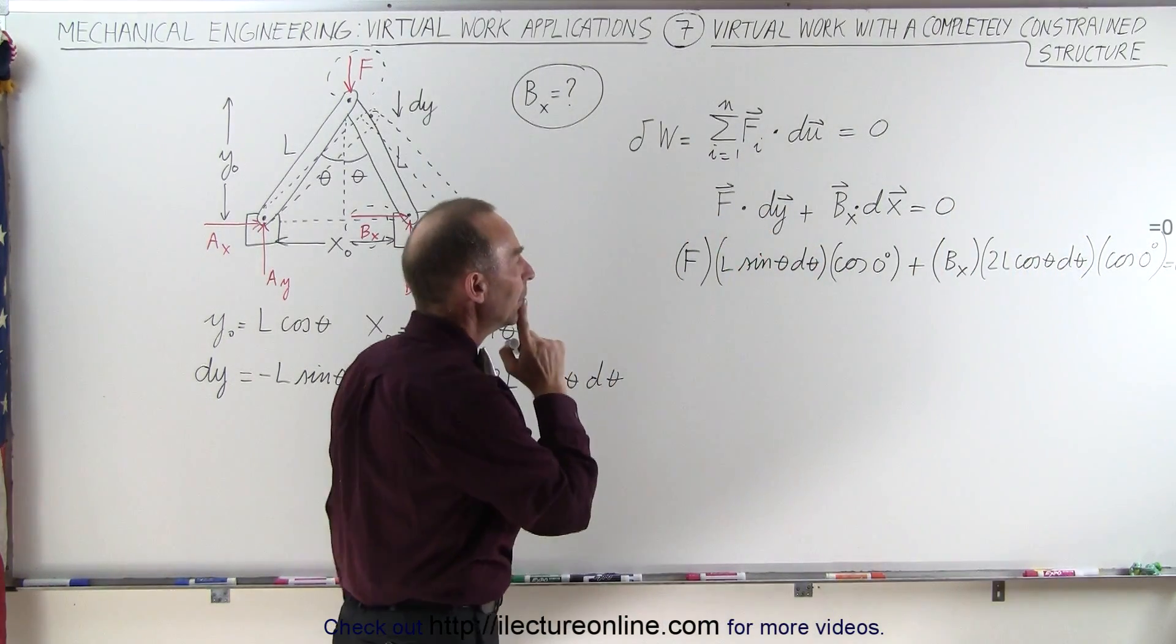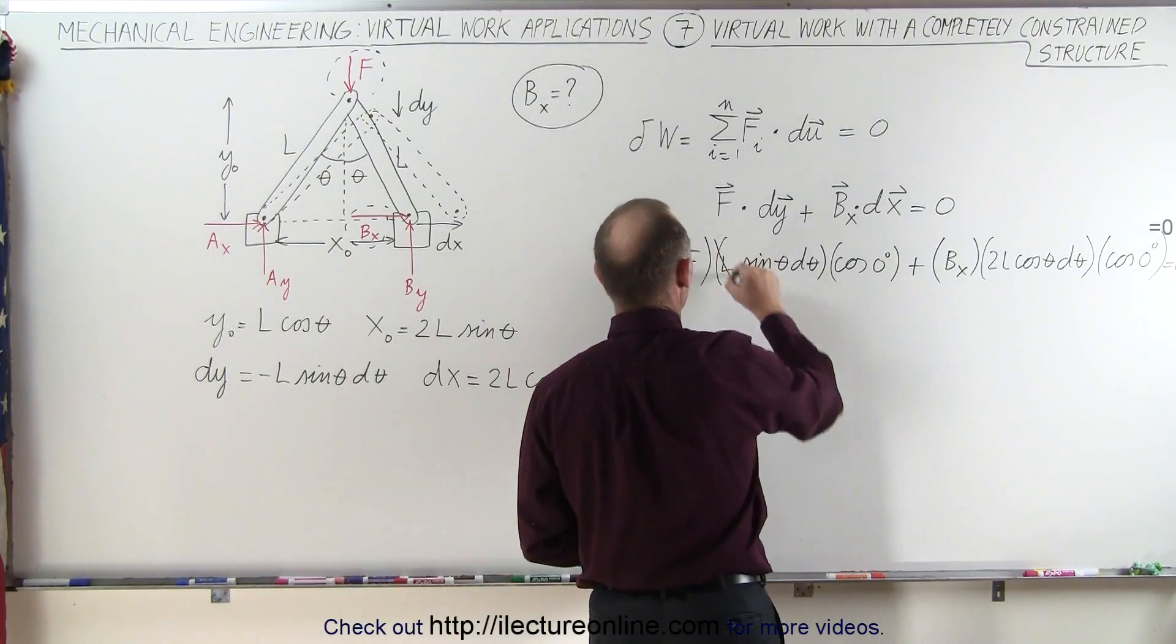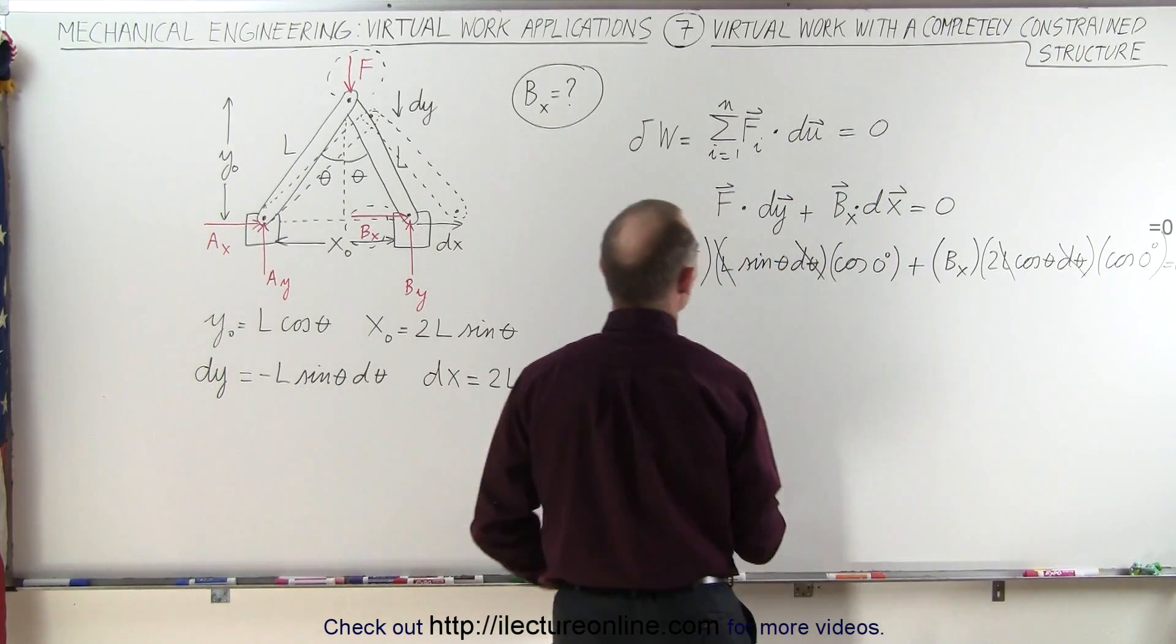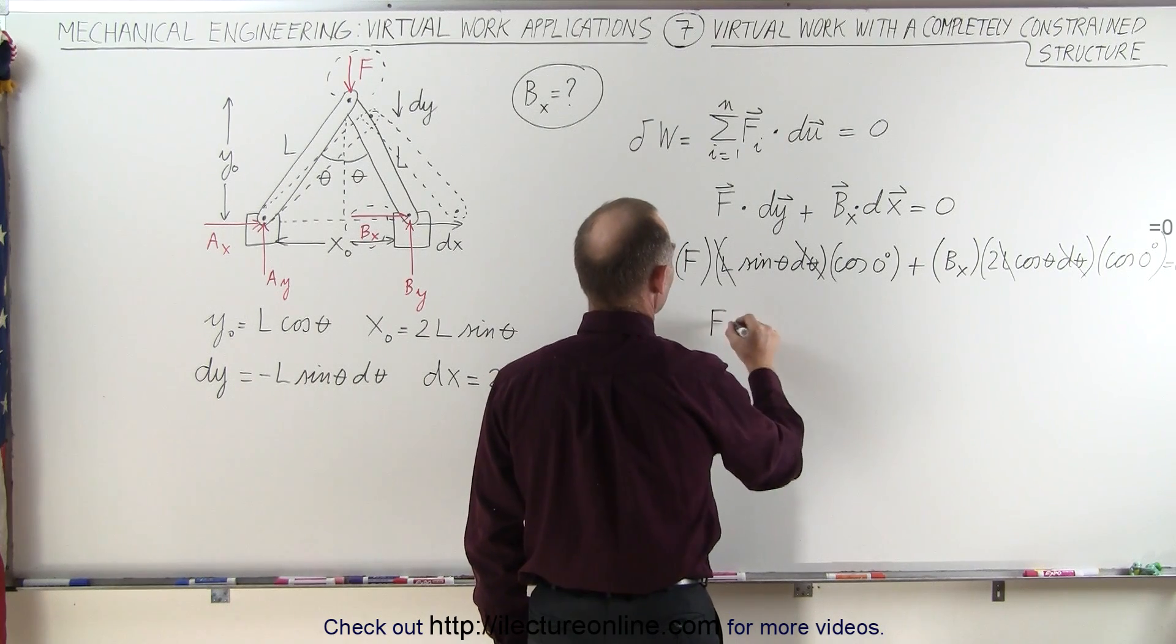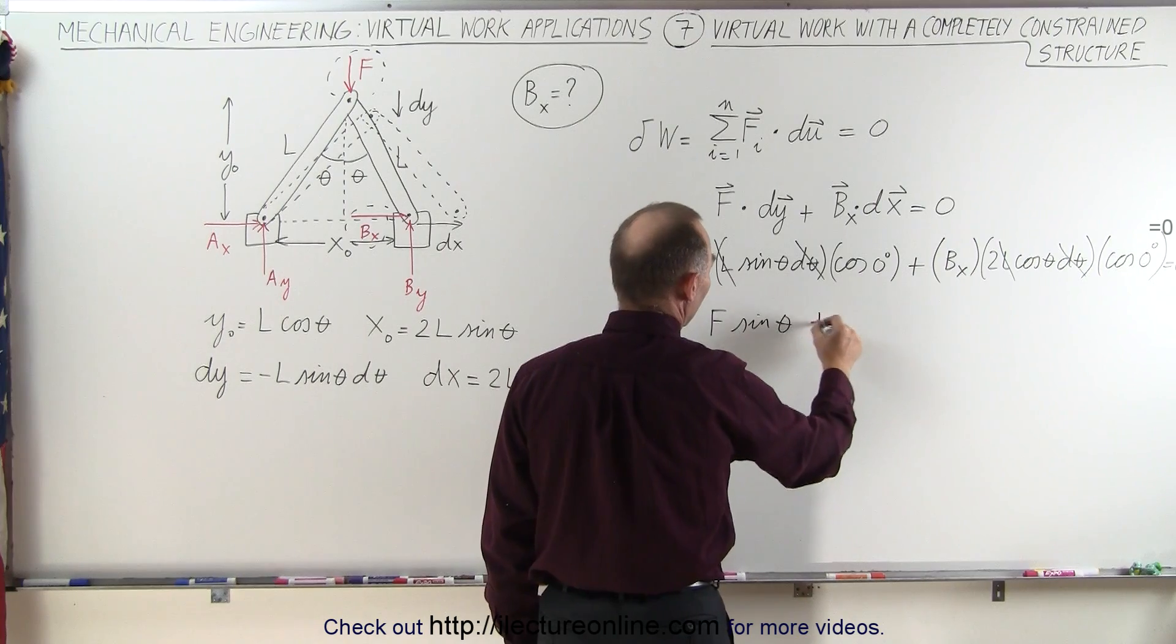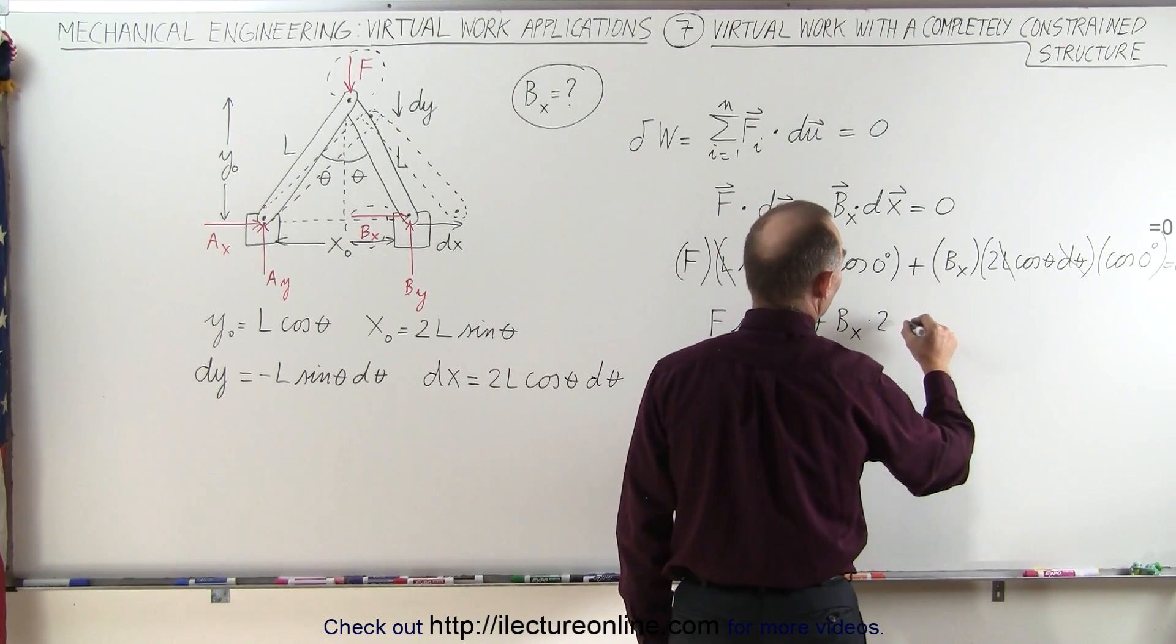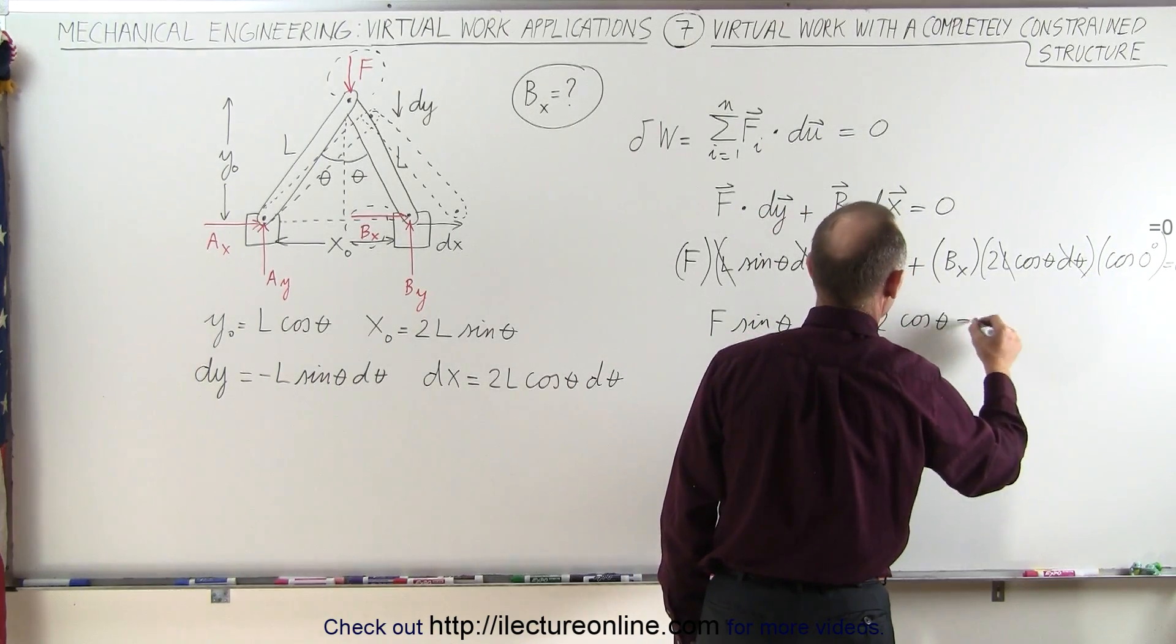Now notice since it's equal to zero, both terms have an L in them, so L cancels out. Both terms have a d theta in it, so that cancels out. So what we're left with on the left side, we have F times the sine of theta times one plus B sub X times two times the cosine of theta times the cosine of zero, which is one, and that equals zero.